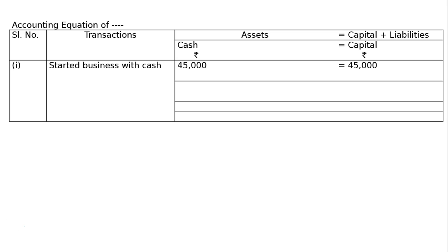Second transaction: opened a bank account with a deposit of 4,500. Cash went out from the shop, minus 4,500, and deposited into the bank account, so bank balance increased by 4,500. There is no effect on capital — cash deposited into bank: deduct from cash, add to the bank.